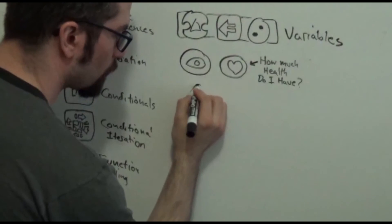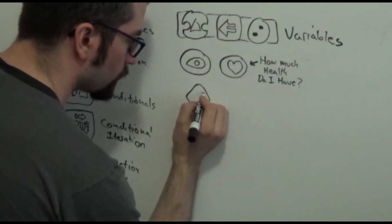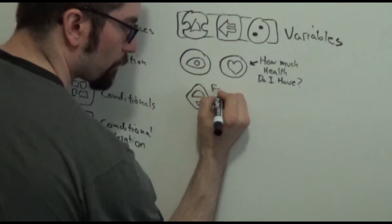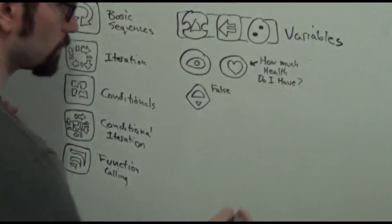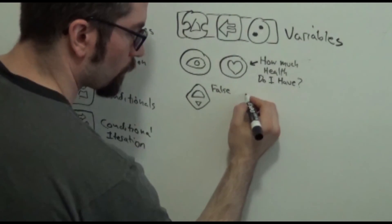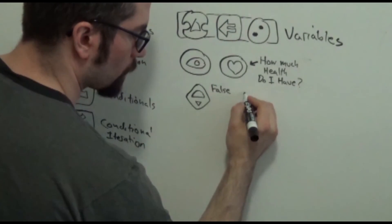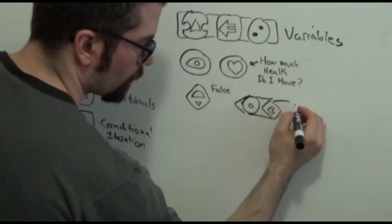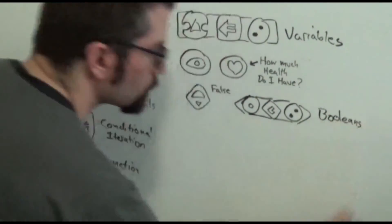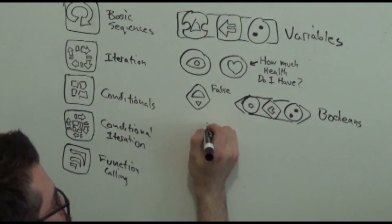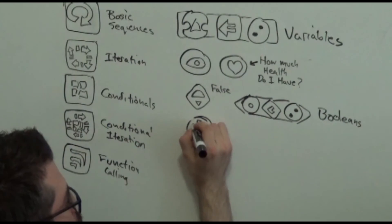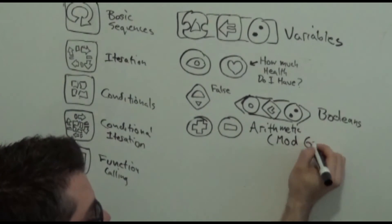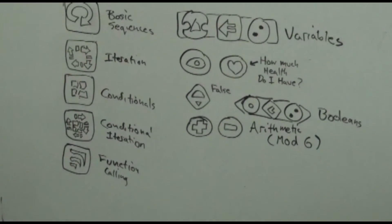We've got booleans, like false, and also boolean commands, like less than. We've got arithmetic operators, this is mod 6, because there's no numbers above 5, and we've even got boolean operators.